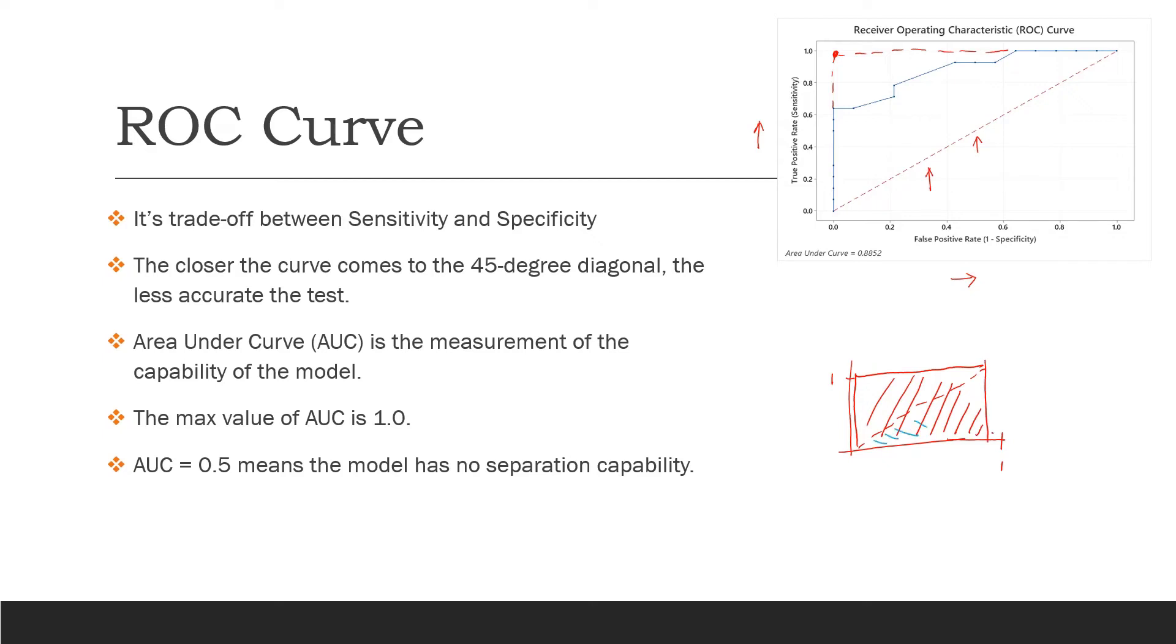This is the area as 0.5. If your area is 0.5, that means your model is randomly generating values. Your model has to have a value of area under curve more than 0.5.